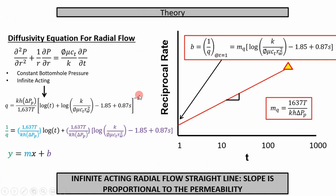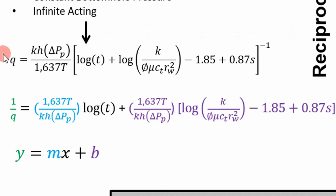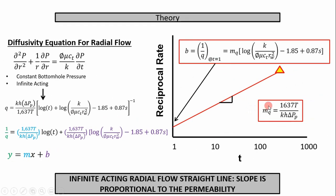From the intercept and slope you can approximate parameters such as permeability and skin. You probably won't find much of this in a textbook — textbooks typically derive solutions for constant rate production, but realize that constant rate and constant bottom hole pressure arrive at similar, essentially identical solutions. This interpretation is advantageous because it's derived from fundamentals and lets you get reservoir characterization parameters.